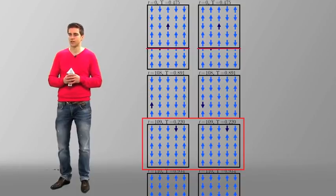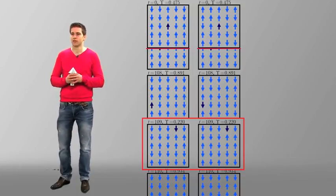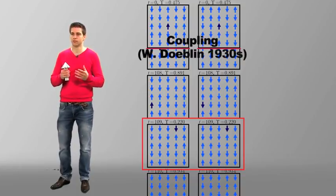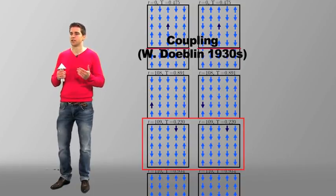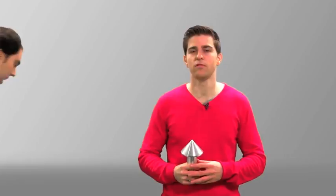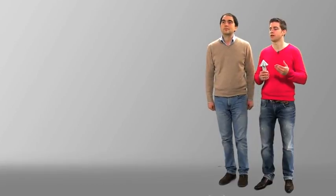Coupling of Markov chains has first been formulated by the mathematician Wolfgang Döblin in the 1930s, and it was really an ingenious observation. Alberto, in a few moments, will show you how we can really prove that all the 2 to the nth initial configurations couple, even if n equals 100 or 1000 or a million. This will lead to the perfect sampling idea.